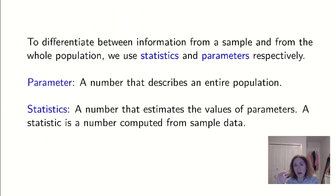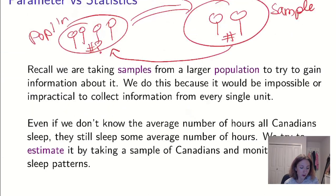So to differentiate between the fact that we have these two different kinds of numbers, we're going to talk about statistics and parameters. Our parameter is going to be a number that's describing an entire population. If we're talking about a probability distribution, it's a number that describes a probability distribution. And then statistics are numbers that estimate the values of a parameter. A statistic is a number that's computed from sample data. So if we think on our picture here, this number about the population is going to be our parameter, and the number over here in our sample is going to be our statistic. Think parameter-population, statistic-sample.